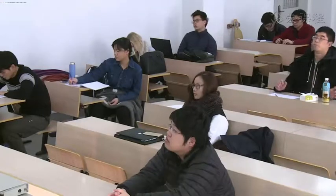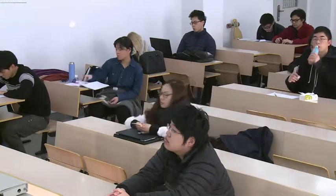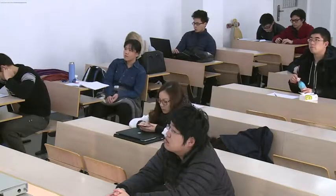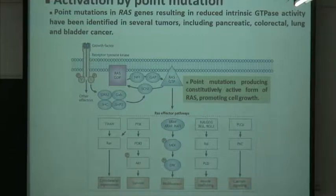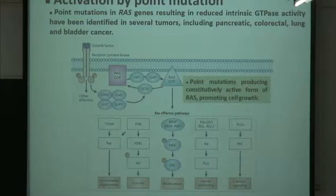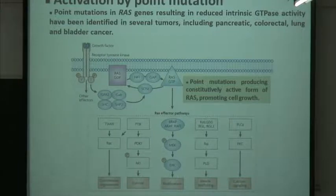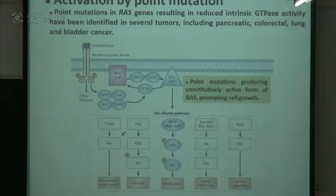The third example involves activation by point mutation, using the famous oncogene RAS. This figure displays the RAS signaling pathway. RAS is a GTPase with a GTP-bound active form and a GDP-bound inactive form, and it activates downstream signaling pathways to promote cell survival and proliferation. Point mutation produces a constitutively active form of RAS, promoting cell growth. RAS mutations have been found in several tumors including pancreatic, colorectal, lung, and bladder cancer.